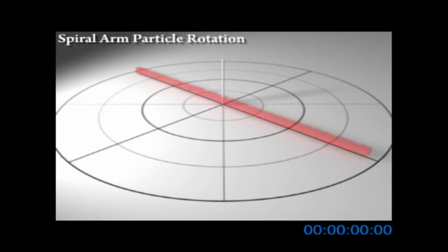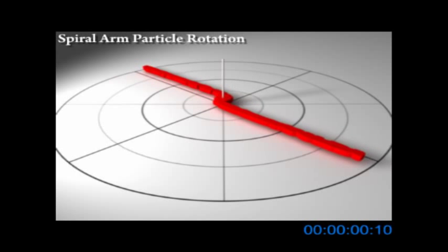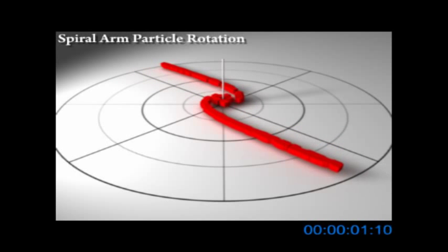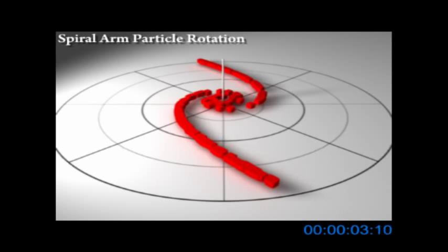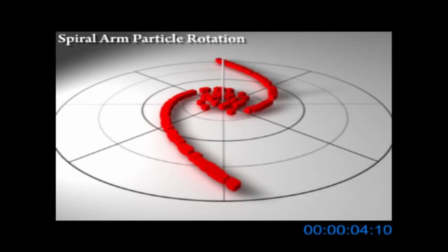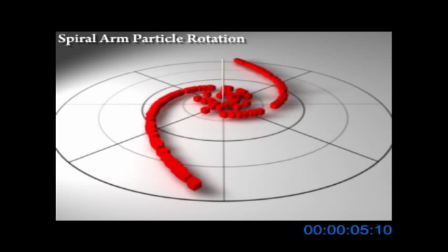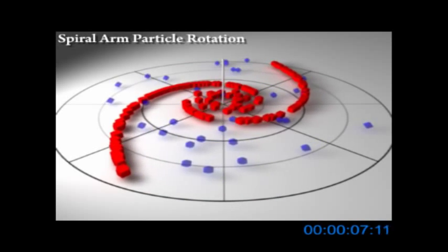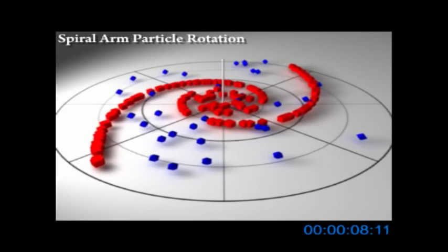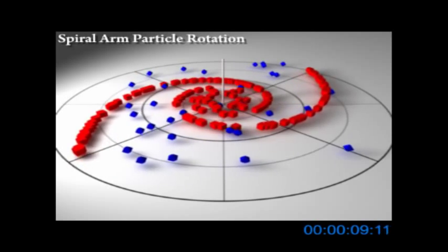The galaxy spiral arms use a line of particles with a rotation motion applied. Dust cloud particles are added randomly, but included in the rotation motion.